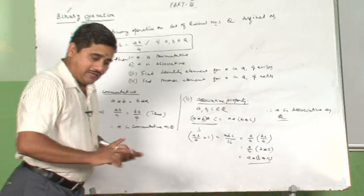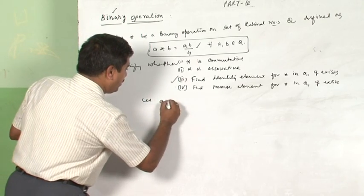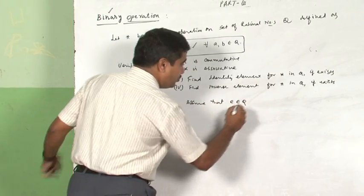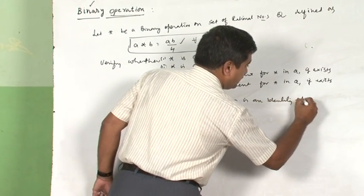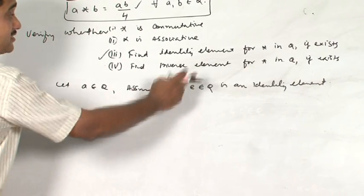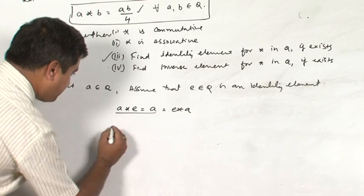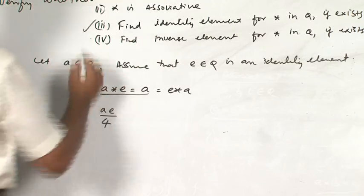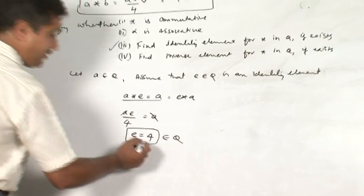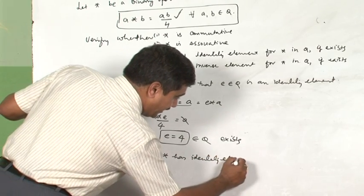Now for the identity element: let A belong to Q and assume E in Q is the identity element. By the identity property, A★E = A. Substituting the definition: AE/4 = A. Cancelling A, we get E = 4. Since 4 is a rational number, the identity element exists. Therefore, star has identity element E = 4 in Q.